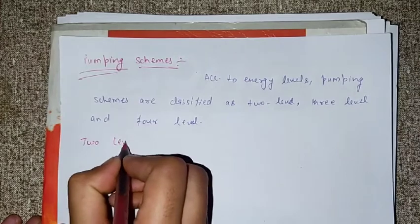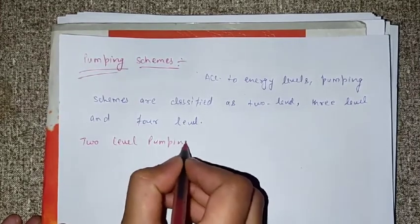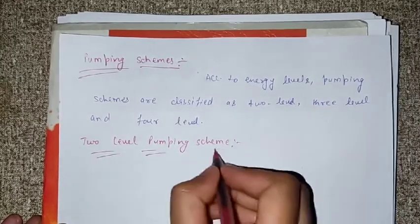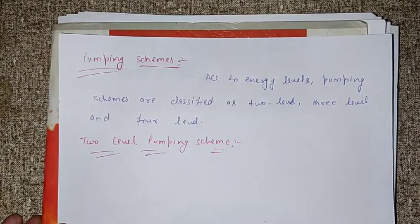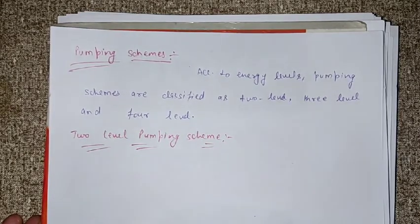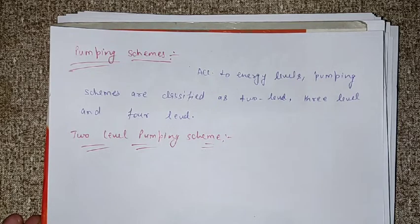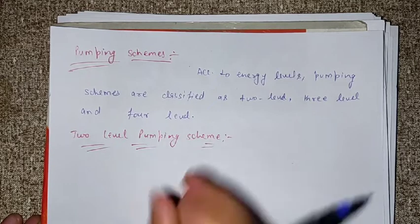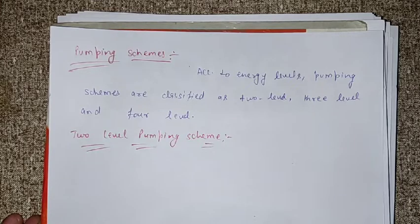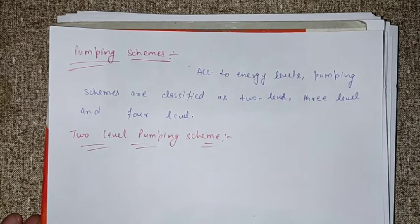What is the two-level pumping scheme? Population inversion means pumping an excess of atoms into the higher energy state. How can we pump the atoms into the higher energy state? By applying intense radiation. This is what the pumping scheme means — we pump the excess of atoms into the higher level by applying intense radiation.